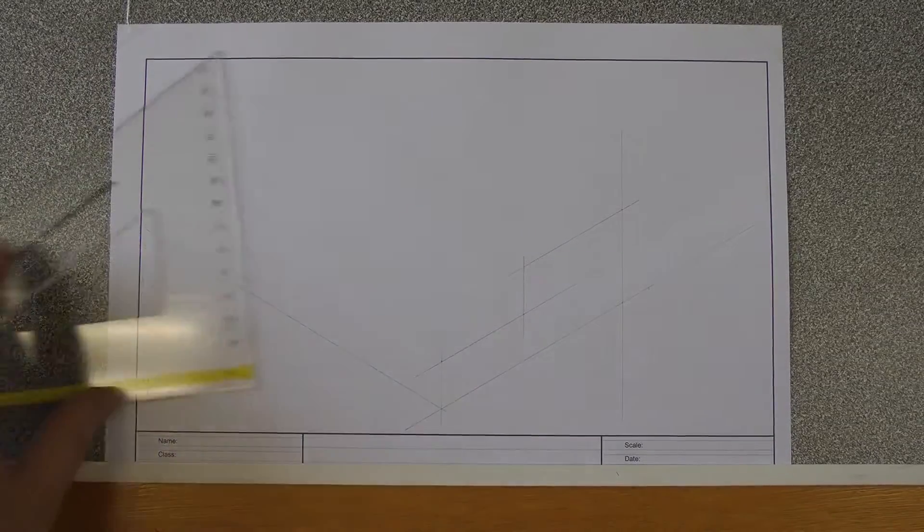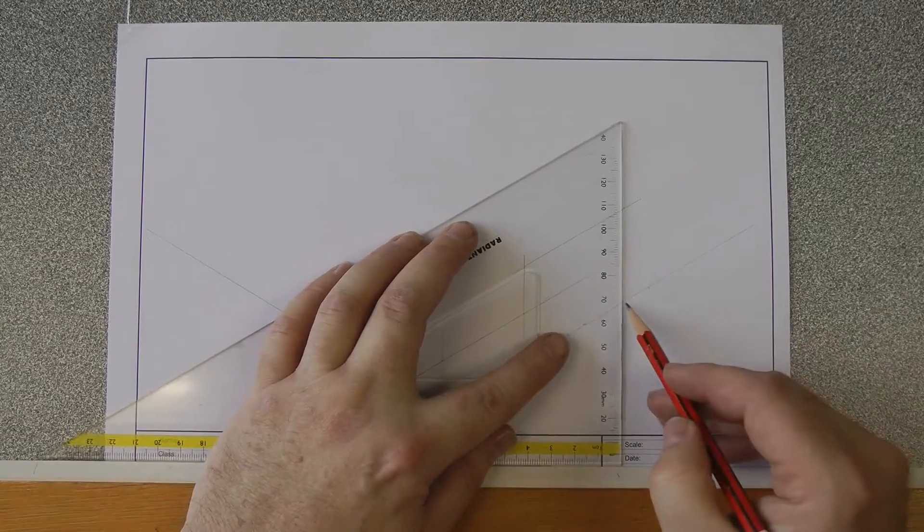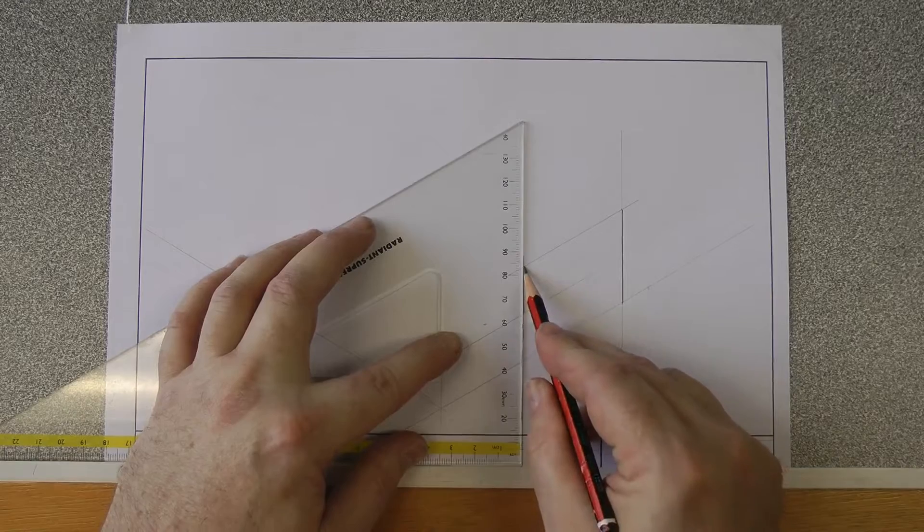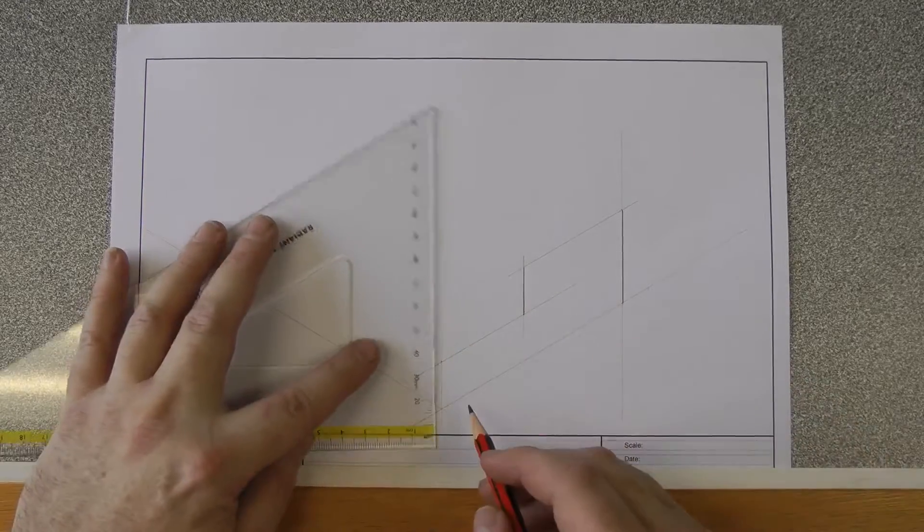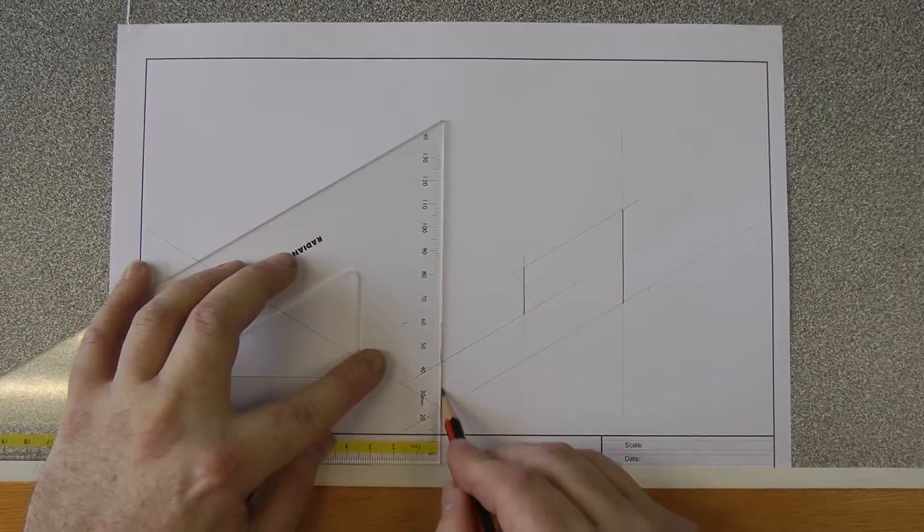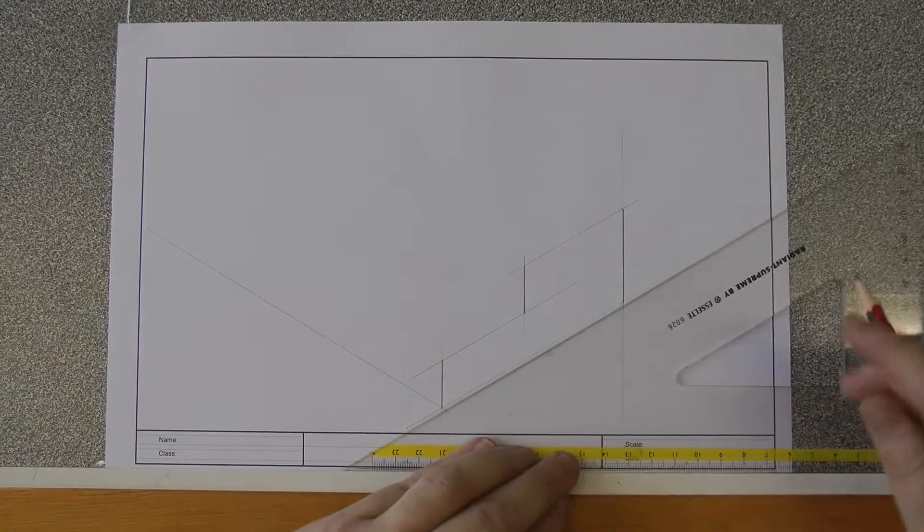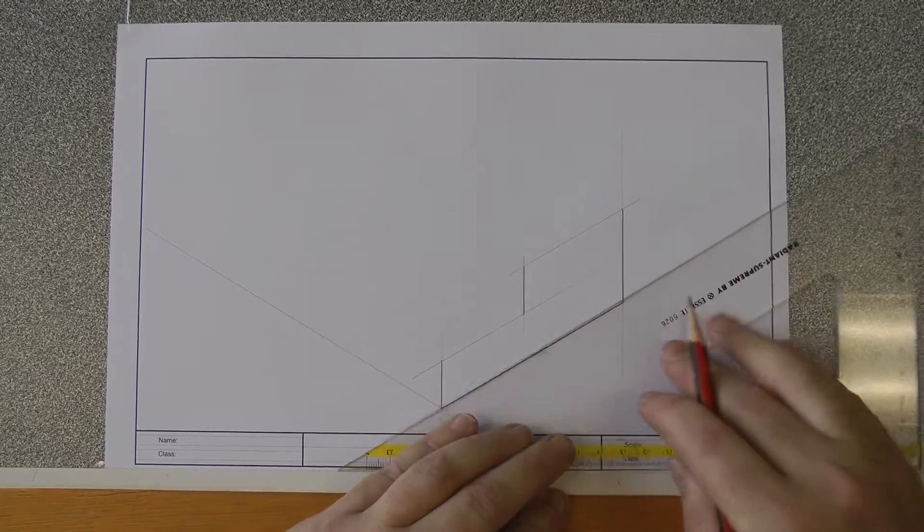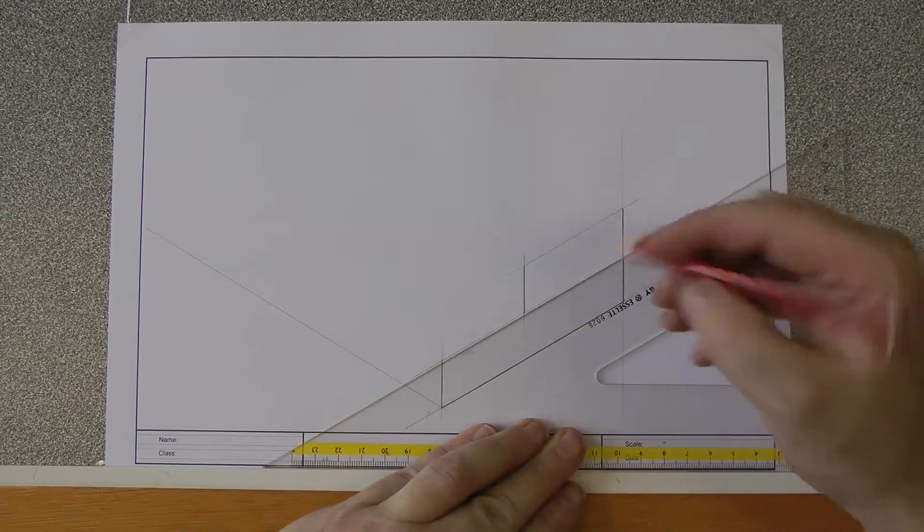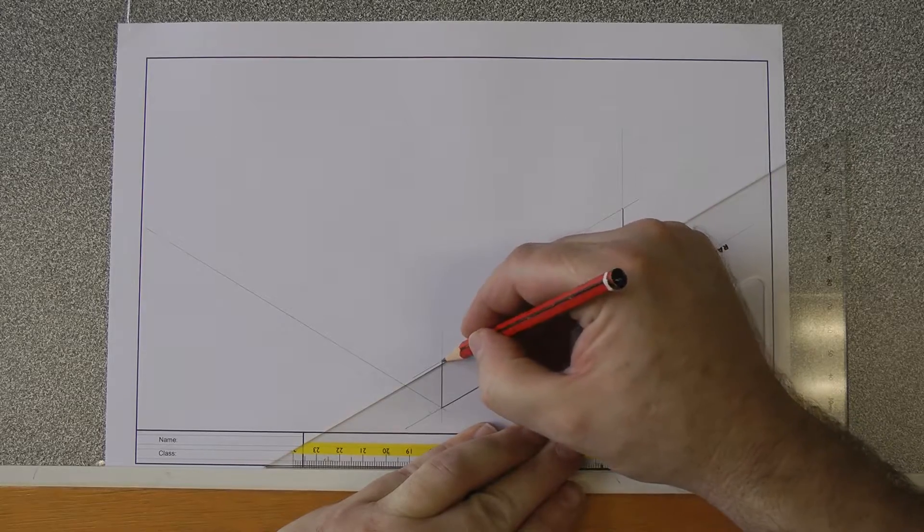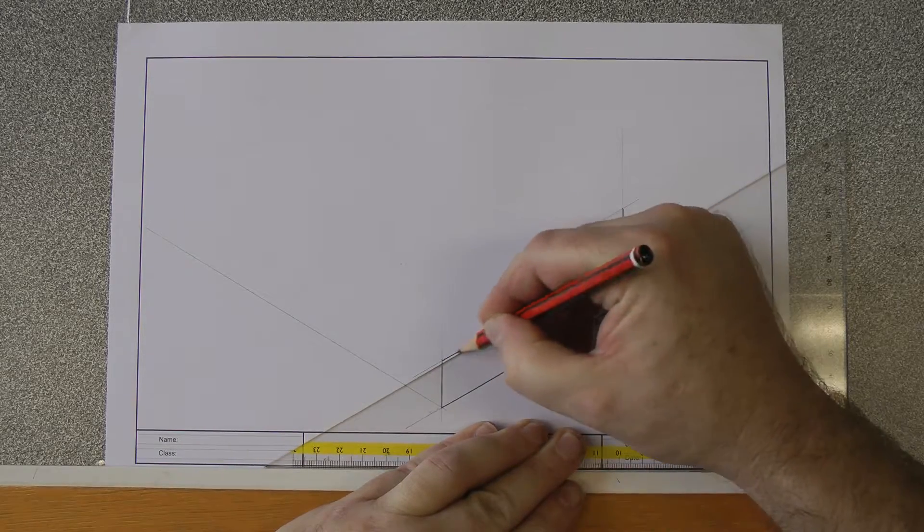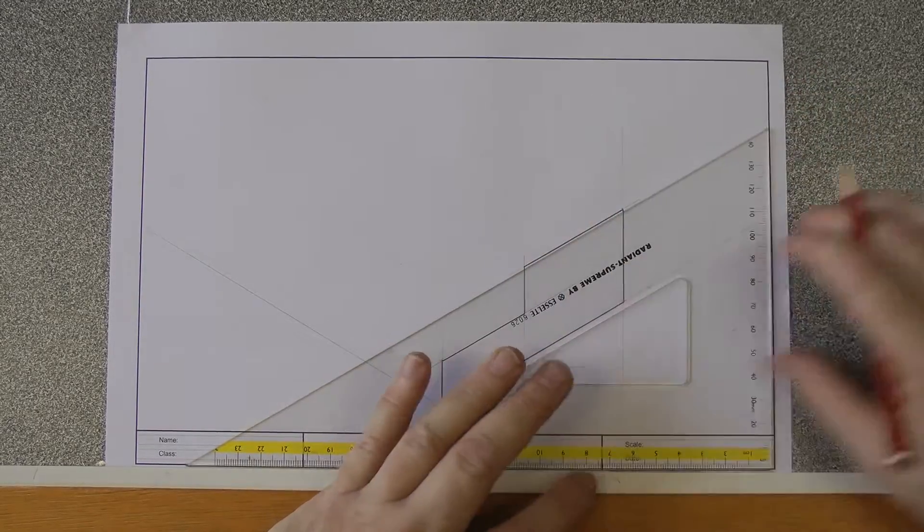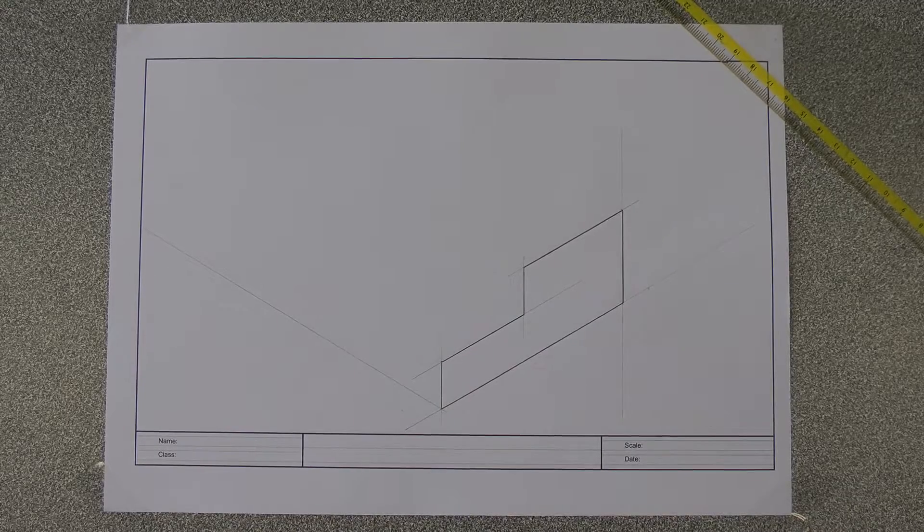So at this point I can actually come along with my set square again and I can draw my lines in dark. So these are my vertical lines. These are my angled lines at 30 degrees off to the right. And that is my front surface drawn in in dark.